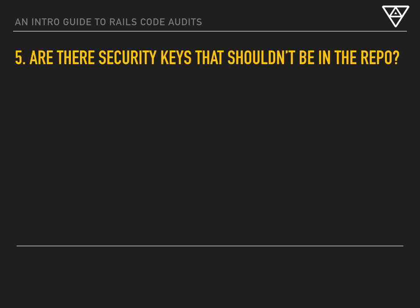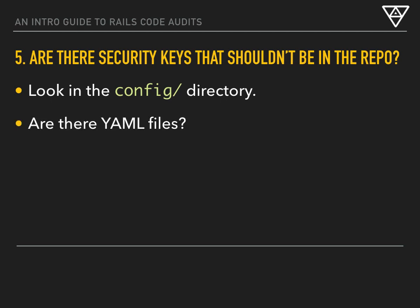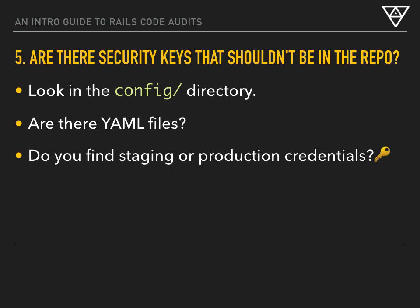Another thing we're quick to check on — remember, this is a new project that we've just cloned — is whether there are any credentials in the application that we probably shouldn't have access to. We'll look at things in the config directory. Are there any YAML files in there that might have staging or production database credentials, third-party tool credentials like MailChimp, Stripe, or AWS? Storing those in your Git repository is a really bad idea because it's difficult to get rid of that information. That stuff should be managed through some other approach on your servers, and should not be something you actually store and keep versions of in the code base itself.